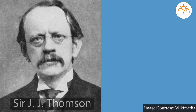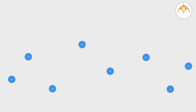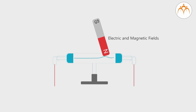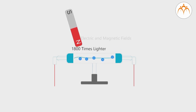Sir J.J. Thomson in 1897 said that the atom has negatively charged particles and named them electrons. These particles were very light — approximately 1800 times lighter than the hydrogen atom.